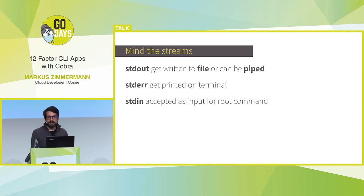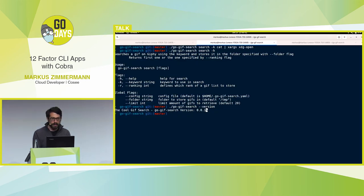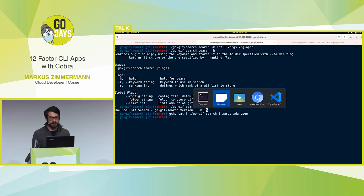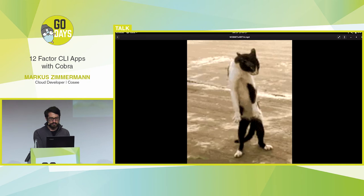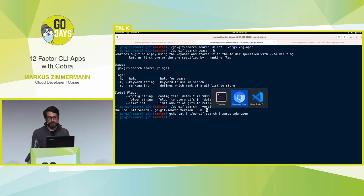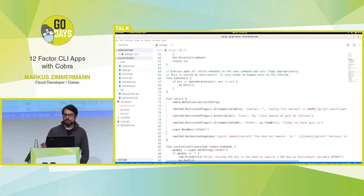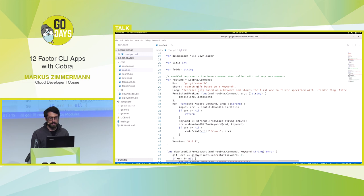Another thing to think about is using stdin to accept piped input. As an example, I implemented in my root command also a search via stdin, so I can do for example 'echo cat' and pipe it into my command, and the same thing happens as with a normal search. This is nice if you support it because then people can use the Unix tooling flow with your CLI. The basic implementation is just reading from stdin in the root command, but you could also do this in sub-commands.